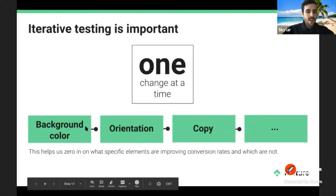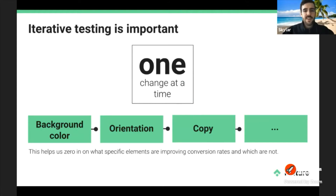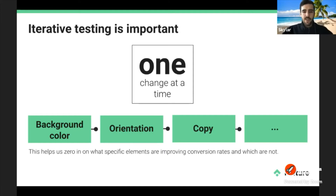The next important point is that iterative testing is important. Iterative testing means only making one specific change at a time. For example, you change the background color — that's one test. Then you change the orientation from portrait to landscape — that's the next test. Then you change the copy. In each test you're changing just one element at a time, which helps zero in on which specific elements are improving conversion rates.